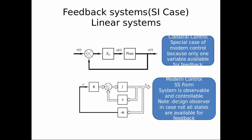In modern control, the system must be in state space form and must be observable and controllable. In that case we need all the states for feedback. If it's not possible to make all states available, we need to design a state observer — a stochastic or linear observer — to observe all states and make them available for feedback.